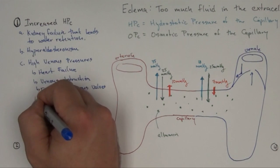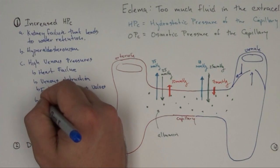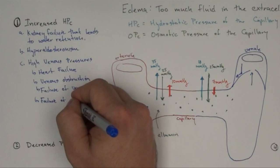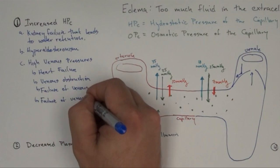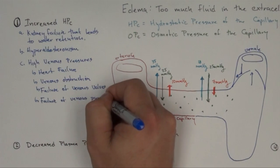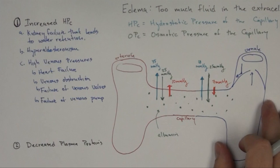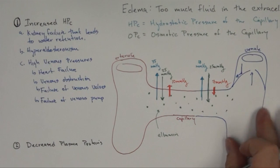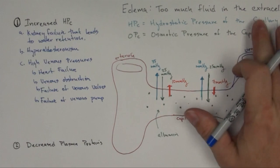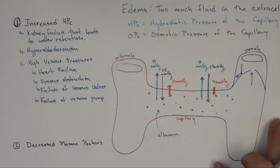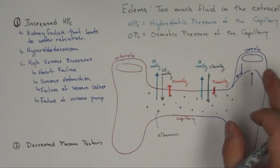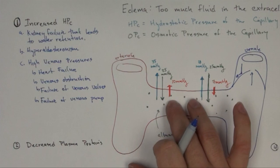Another cause is failure of the venous pump, sometimes called the skeletal pump or muscle pump. When muscles contract on the venule and vein, they push blood up through the valve. We need skeletal muscles contracting down here to push the blood up through. If they don't push it back up, blood is going to back up into the capillary.